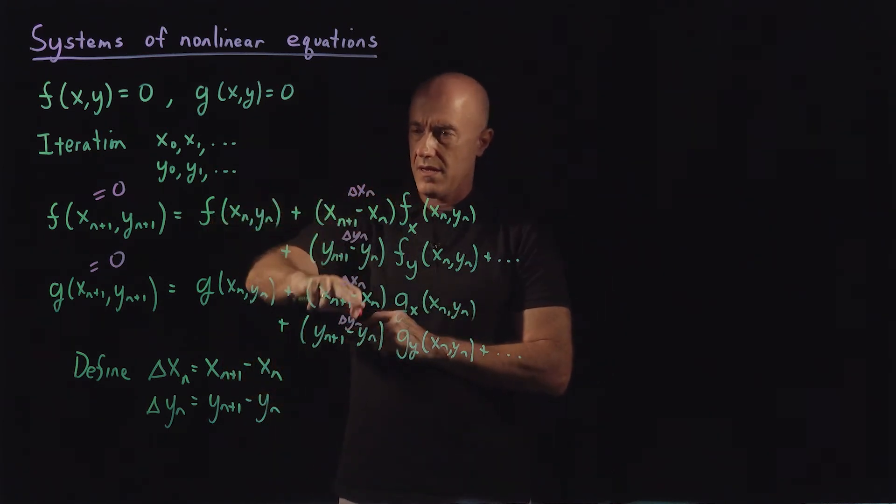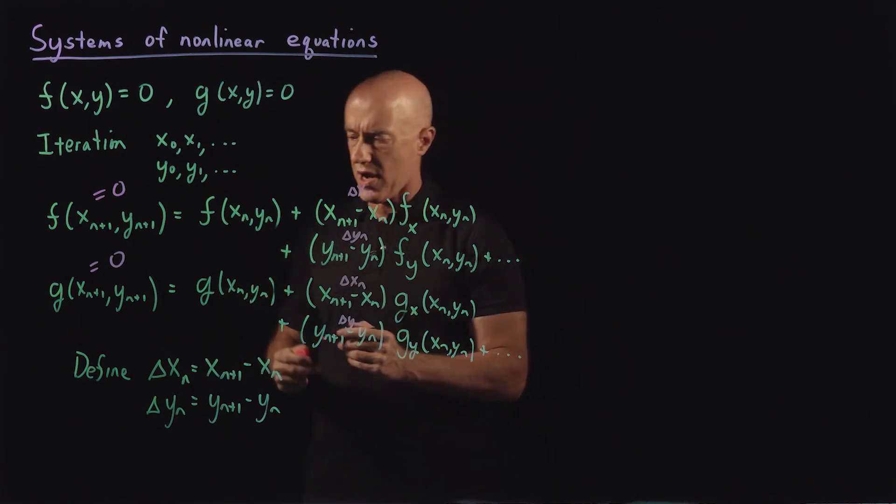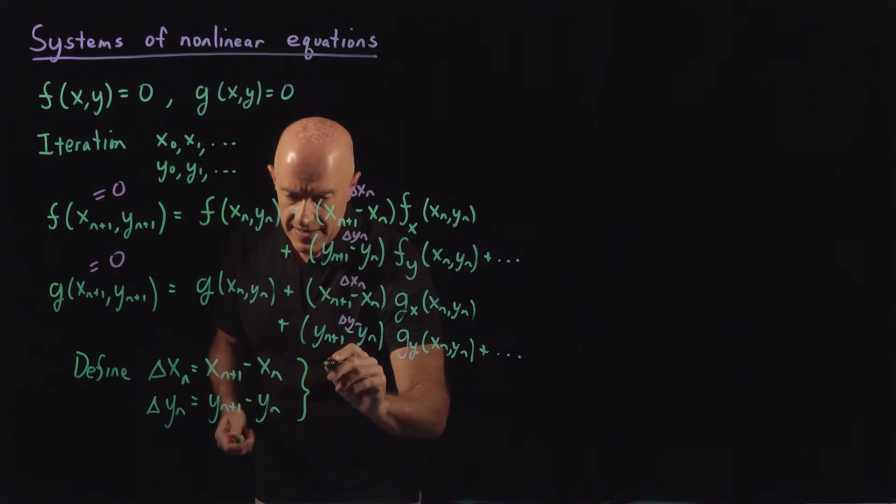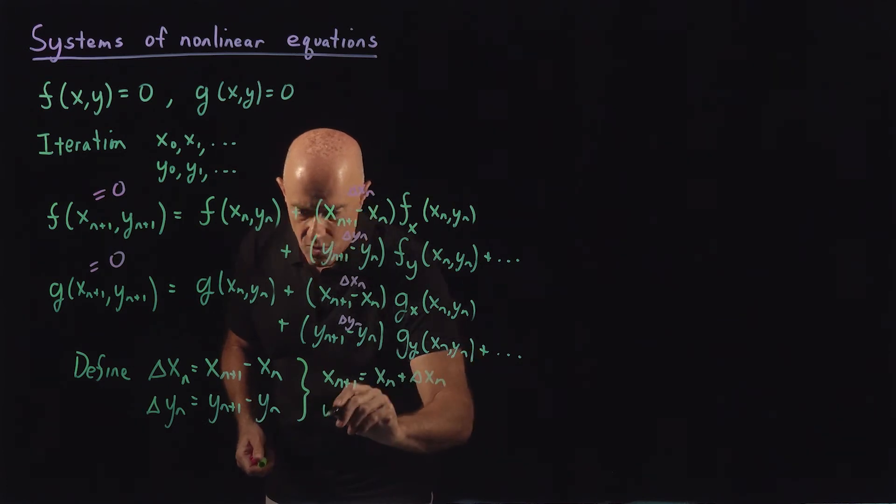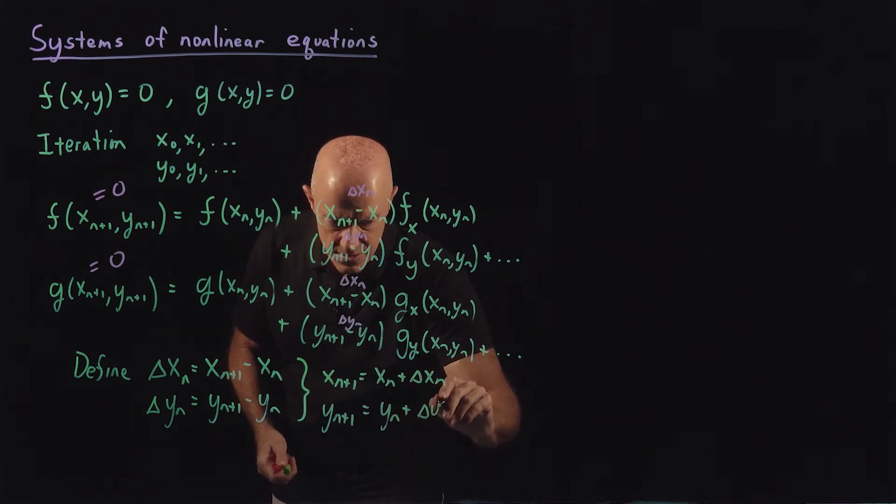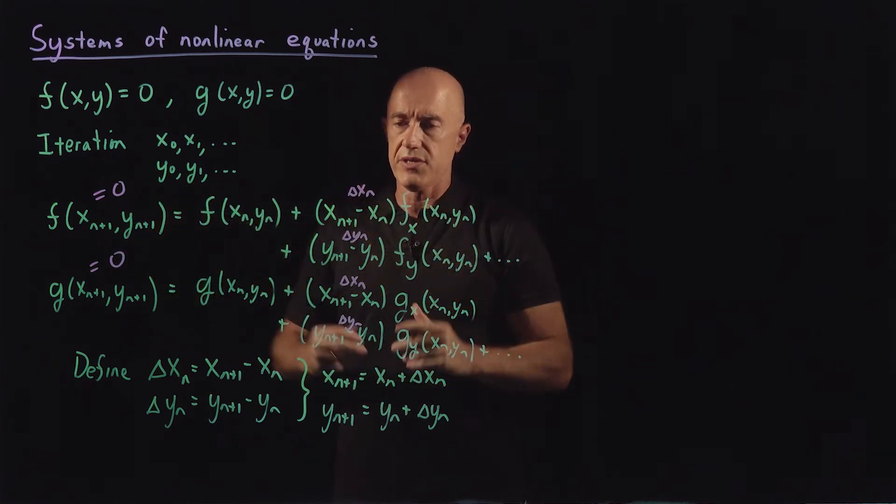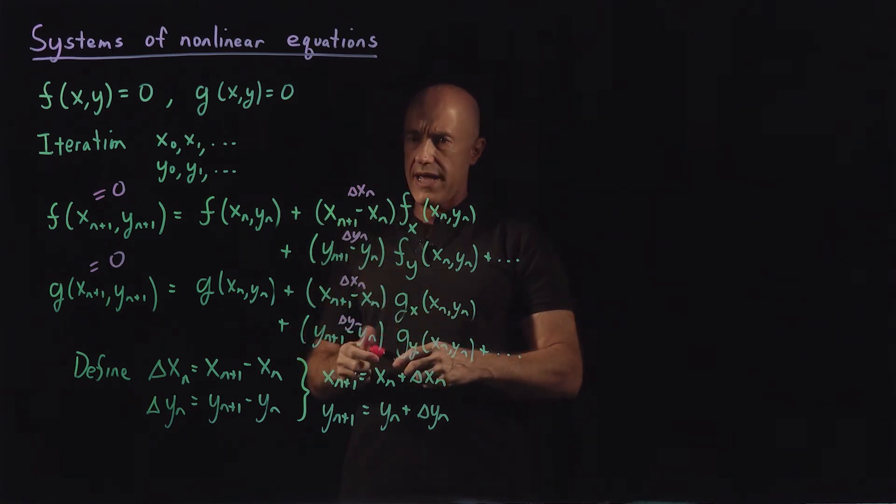And then we want to determine delta x n and y n, because if we determine delta x n and y n, then we can use the fact that x n plus 1 is equal to x n plus delta x n, and y n plus 1 is equal to y n plus delta y n. So these are our equations for delta x n and delta y n.